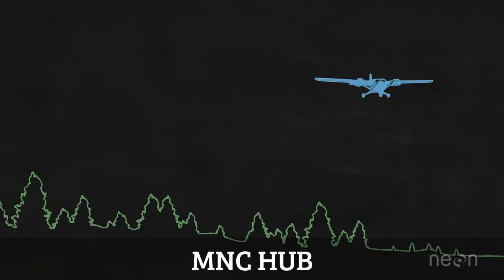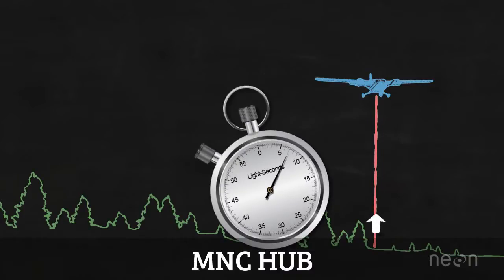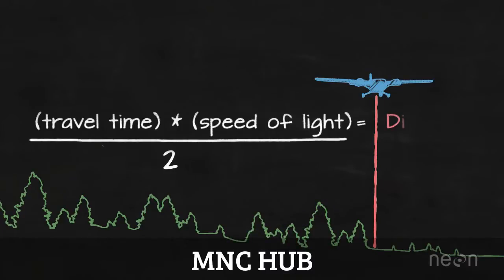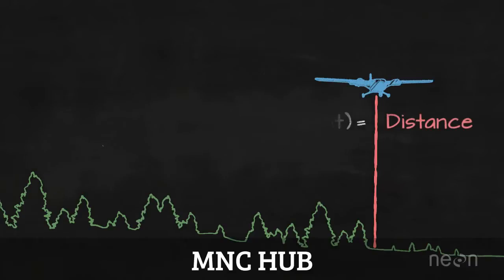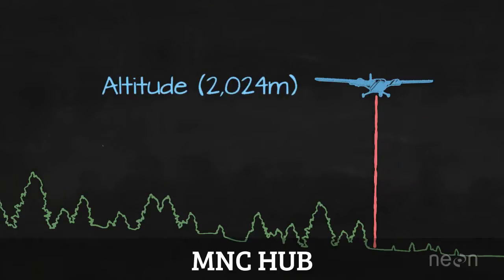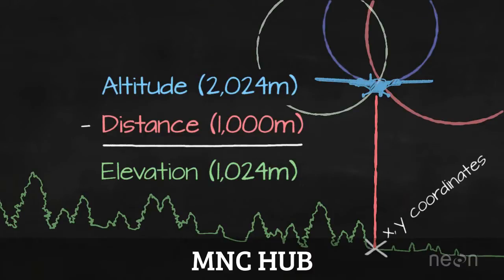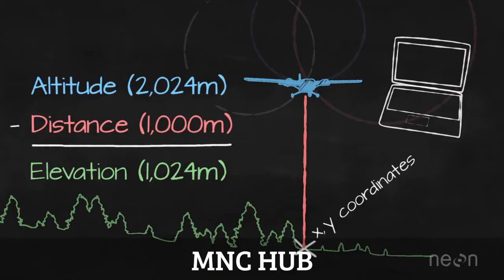The LIDAR system emits pulses of light energy towards the ground using a laser, then records the time it takes for the pulse to travel to the ground and return to the sensor. It converts this time to distance using the speed of light. The system then uses the plane's altitude, tilt, and the angle of the pulse to calculate elevation, and uses a GPS receiver to calculate the object's location on the ground. All of this information is recorded on the computer mounted on the airplane. And that is how a LIDAR system works.